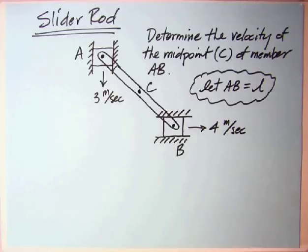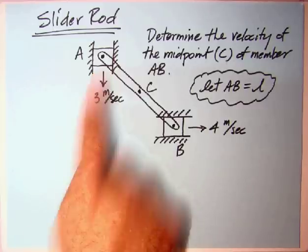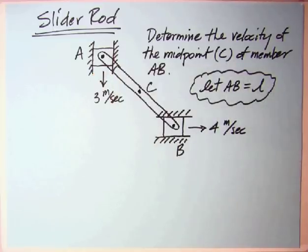A slider rod is essentially a rod. This is the actual rigid body, AB. It's connected to some blocks that are confined to move either vertical or horizontal. Typically, that's the standard. You could have them at other angles, but that would only complicate things.